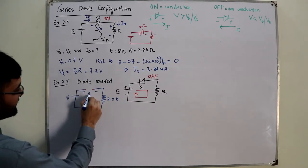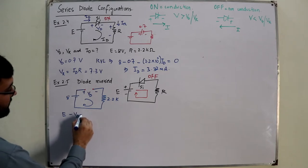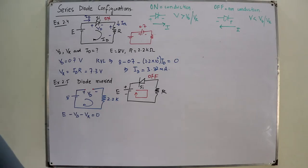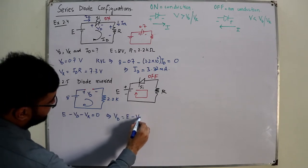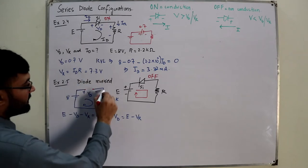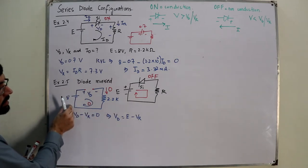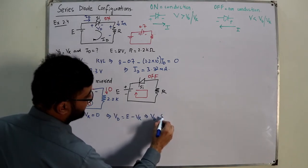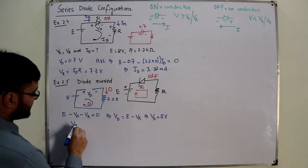Applying KVL: E − VD − VR = 0, so VD = E − VR. Since there is an open circuit, no current flows — ID = 0. Therefore VR = ID × R = 0 volts. Since all voltage appears across the open circuit element, VD = 8 volts. Summary for this part: VD = 8 V, VR = 0 V, ID = 0 A.